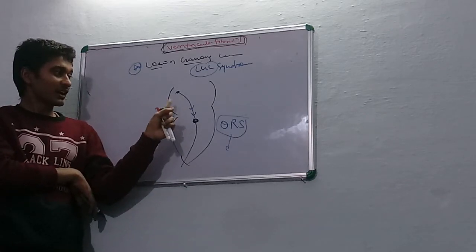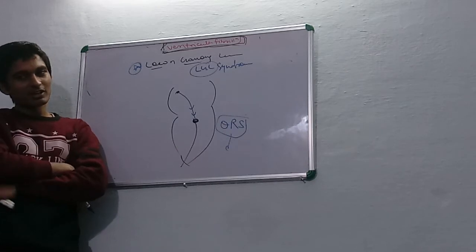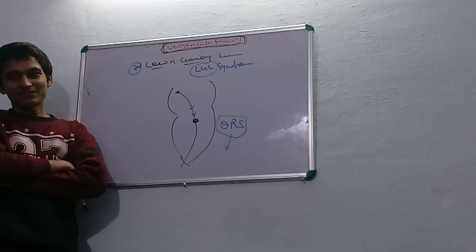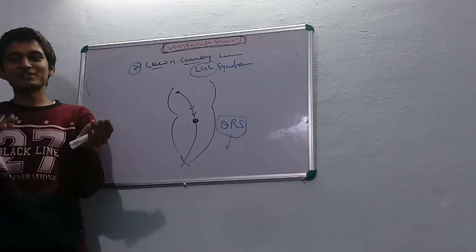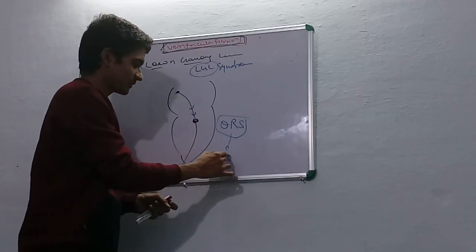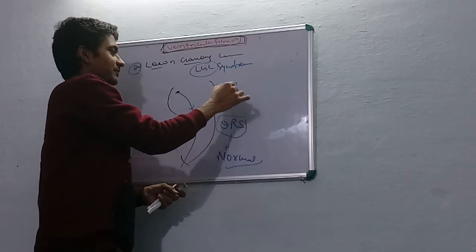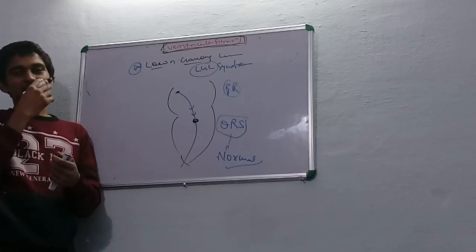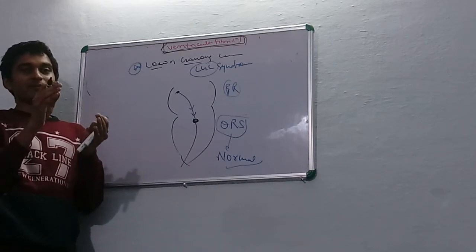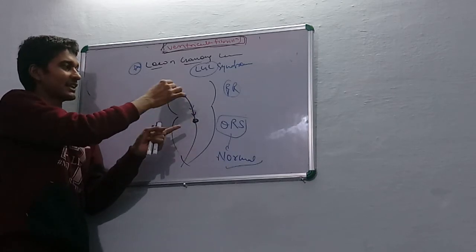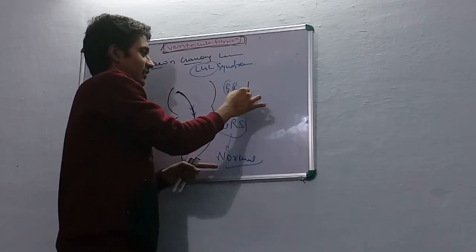In normal conduction, the bundle of His and Purkinje fibers carry the impulse to the ventricle. In this syndrome, the accessory bundle conducts the impulse to the ventricle via Purkinje fibers. So QRS duration will be normal, but PR segment will be reduced because the impulse conducts directly from atrium to ventricle.